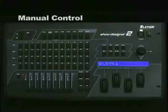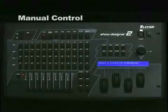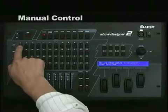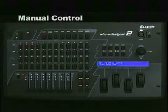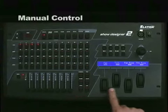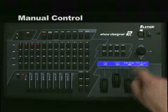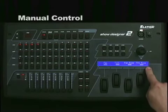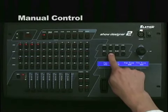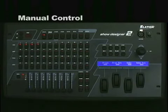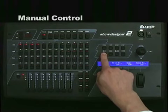To gain manual control over your fixtures, press the fixture button, then select the fixtures you want to control by selecting from the 1 through 48 buttons. I'll select fixtures 1, 2, 3, and 4. You can then use the 8 channel faders, the 4 data wheels, and the joystick to control the channels of your lights. The display shows you 4 channels at a time. To see the next 4 channels, press the right arrow button. To see the previous 4 channels, press the left arrow button.